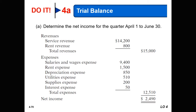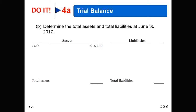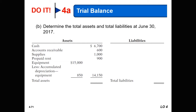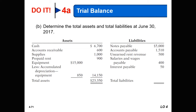The next question asks us to determine total assets and total liabilities as of June 30th. We transfer asset accounts: cash, accounts receivable, supplies on hand, prepaid rent, equipment, and accumulated depreciation, for total assets of $23,350. We then transfer liabilities: notes payable, accounts payable, unearned rent revenue, salaries and wages payable, and interest payable, for total liabilities of $7,460.